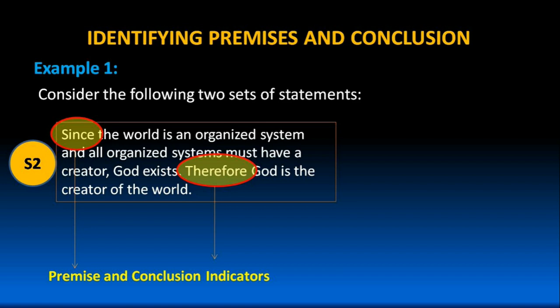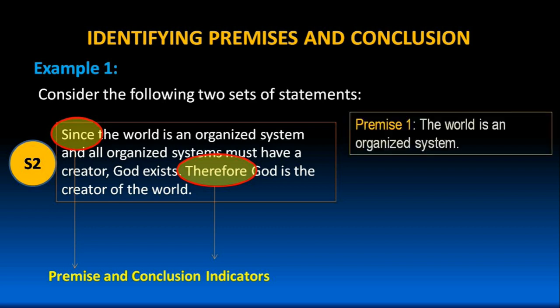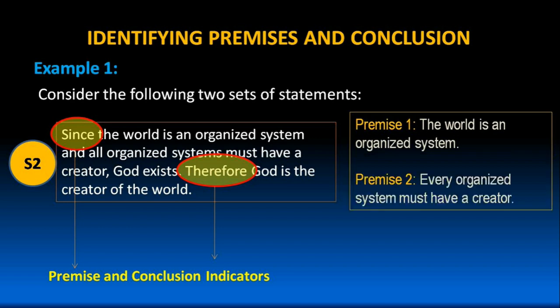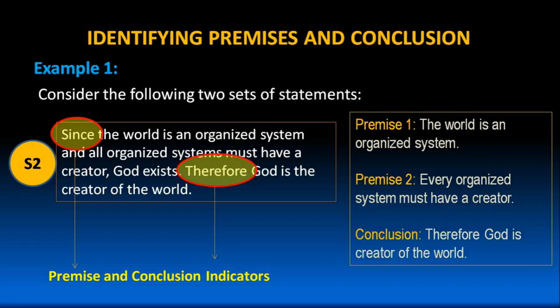Now, let us try to rearrange the given set of statements in the form of premises and conclusion. Premise 1: The world is an organized system. Premise 2: Every organized system must have a creator. Therefore, God is the creator of the world.